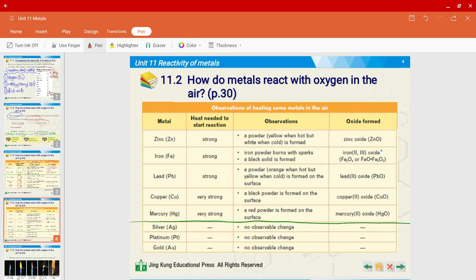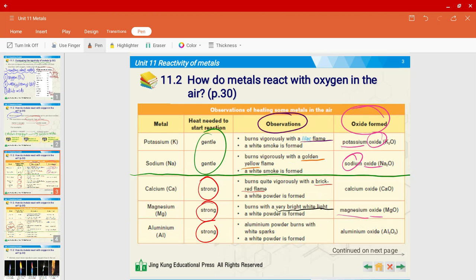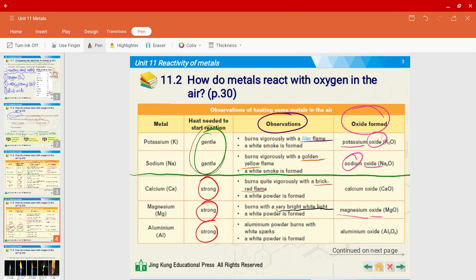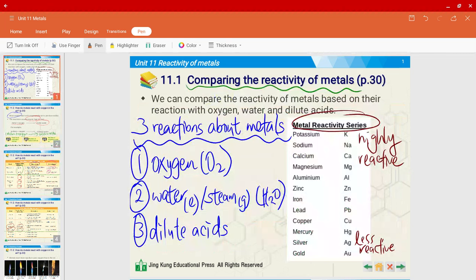All right, so just one more pointer. For copper and mercury, I've put them in the second group. However, you still need a very strong amount of heat to start the reaction. Now can you think about it? Why do only potassium and sodium require gentle heating, but for metals like copper and mercury they need very strong heating? What's the big deal? Yes, it is based on the metal reactivity series. The ones that are up on top are highly reactive, so they only require a very small amount of heat. The ones that are more down below, it takes a more larger amount of heat basically. Eventually those that are down below are not able to react at all.